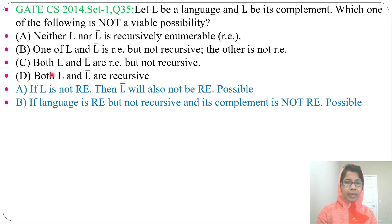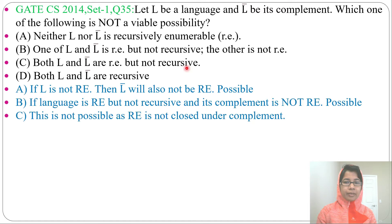Then Option C: both L and L-complement are recursive enumerable but not recursive. This is false. Because if L is recursive enumerable, then its complement is not recursive enumerable, as the recursive enumerable language class is not closed under complement. So both L and L-complement cannot be recursive enumerable.